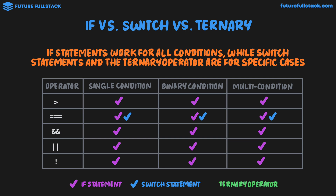For the ternary operator: it can handle all operators, but only for binary conditions — that is, we get an outcome from one of two. As we've looked at in a previous video, the ternary operator is specifically used in two cases: conditional variable assignment and writing messages. The if statement is your go-to for implementing core decision-making logic. The ternary operator is used in very specific cases, and the switch statement I wouldn't worry too much about — but it's important to know what it is and how it works.